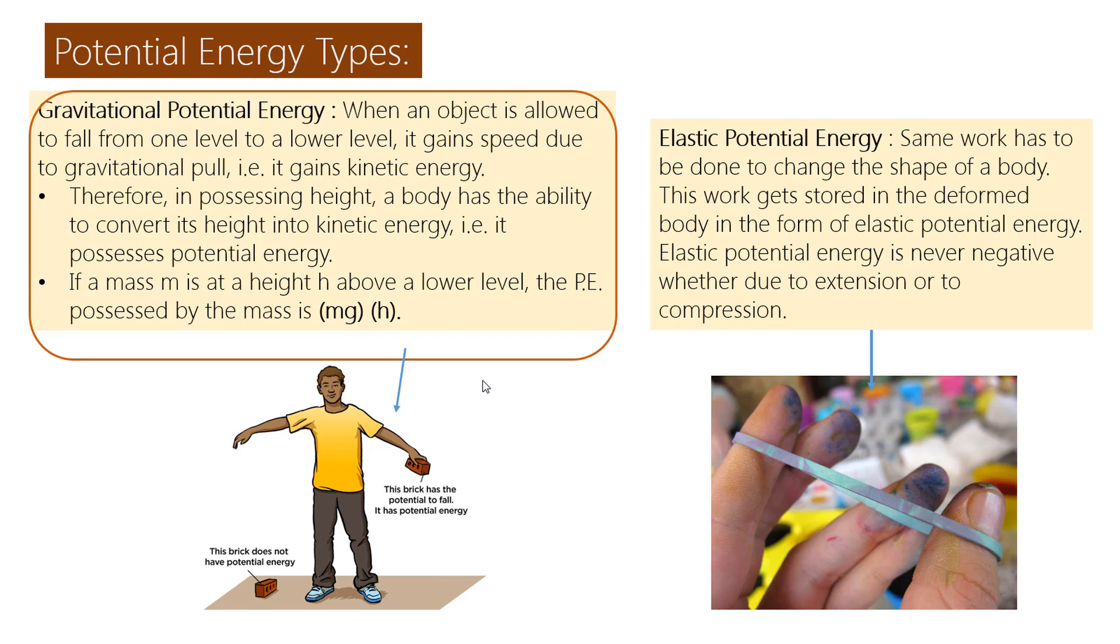That is, it possesses potential energy. If a mass m is at a height h above a lower level, the potential energy PE possessed by the mass is mg times h.